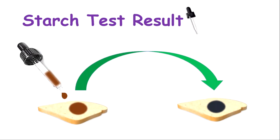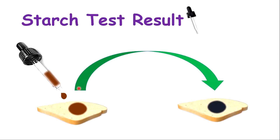To do this test, you add a few drops of iodine onto the food. If it changes to blue-black or black, then you know starch is present. If you're using solid foods, crush them to ensure a faster and more effective reaction — break the food up into small pieces. You can also find iodine in your local pharmacies.